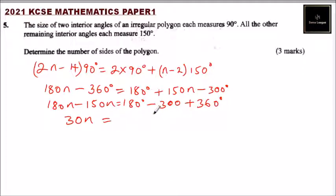This will be 180 plus... minus 360, minus 300, plus 360, that will give us 60 plus 180, so this is 240°. So n equals 240 divided by 30, and that will give you 8 sides.